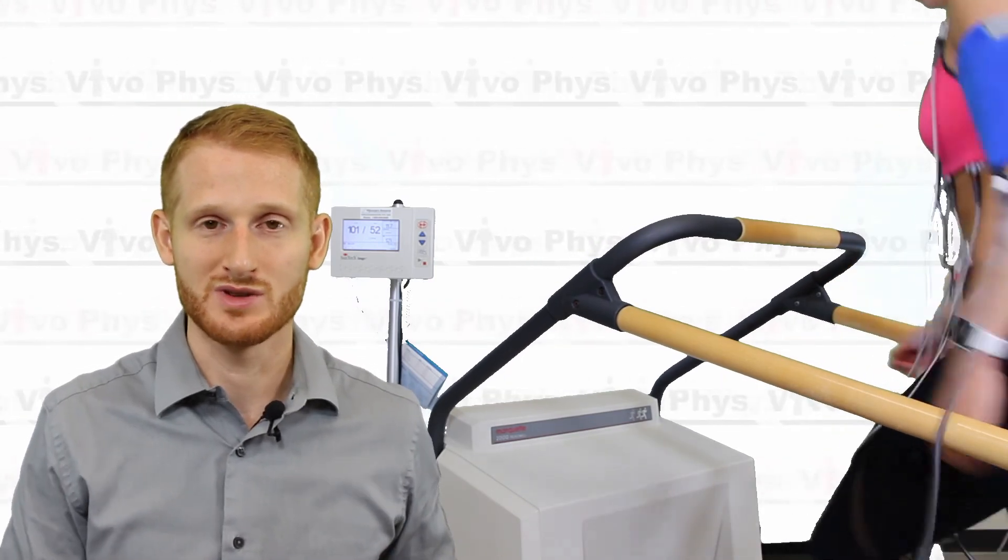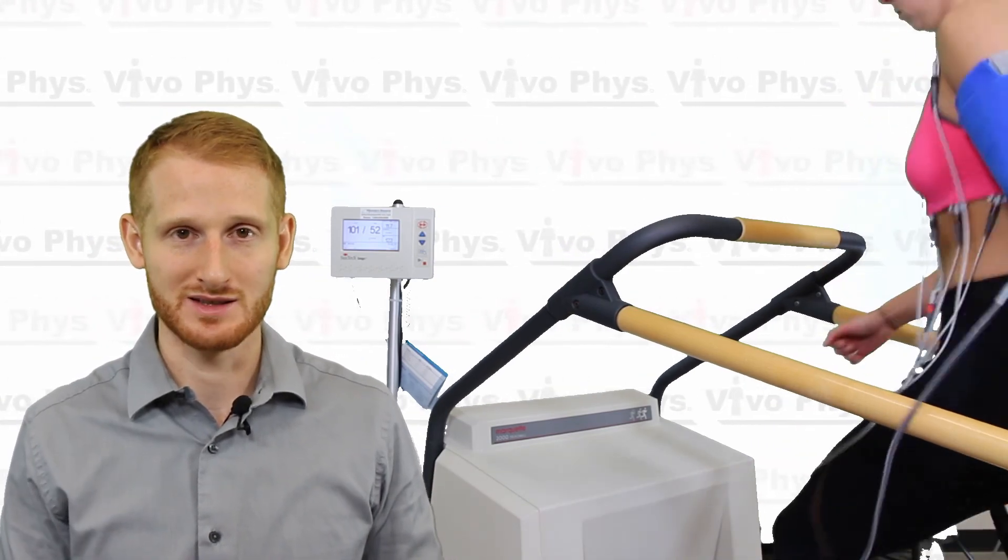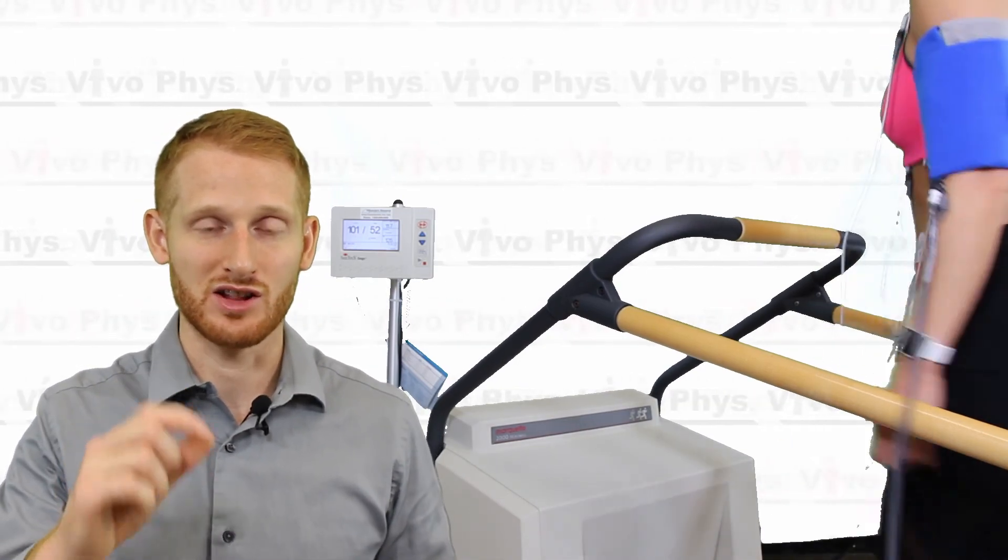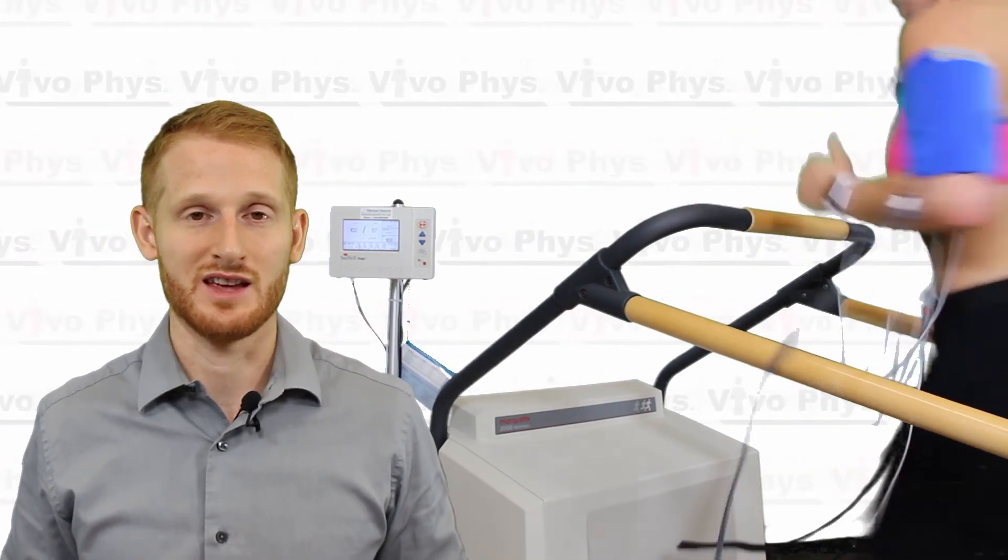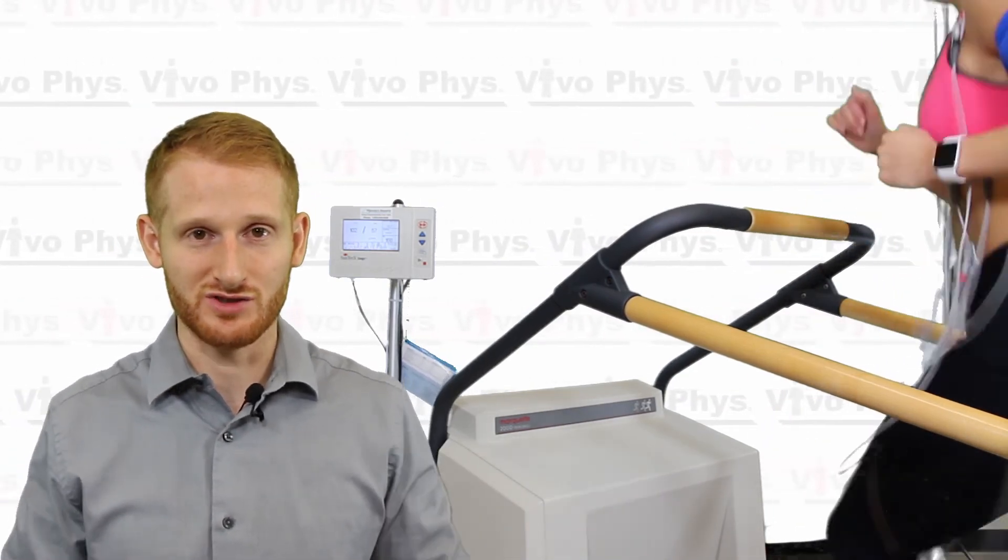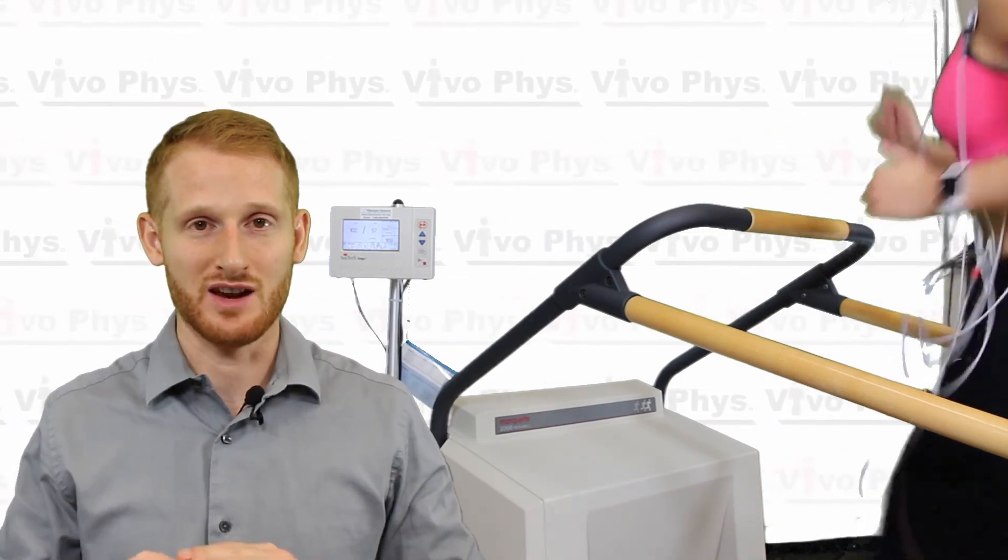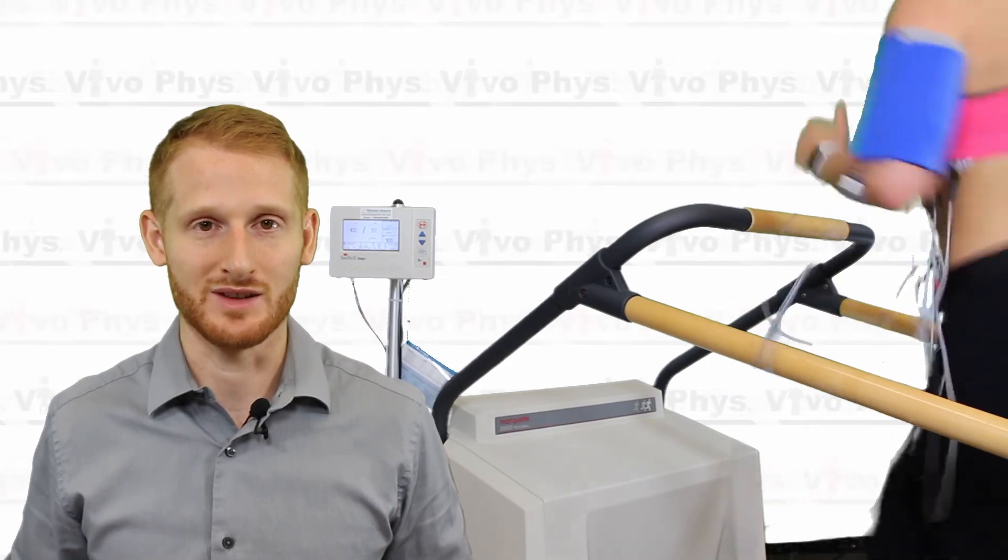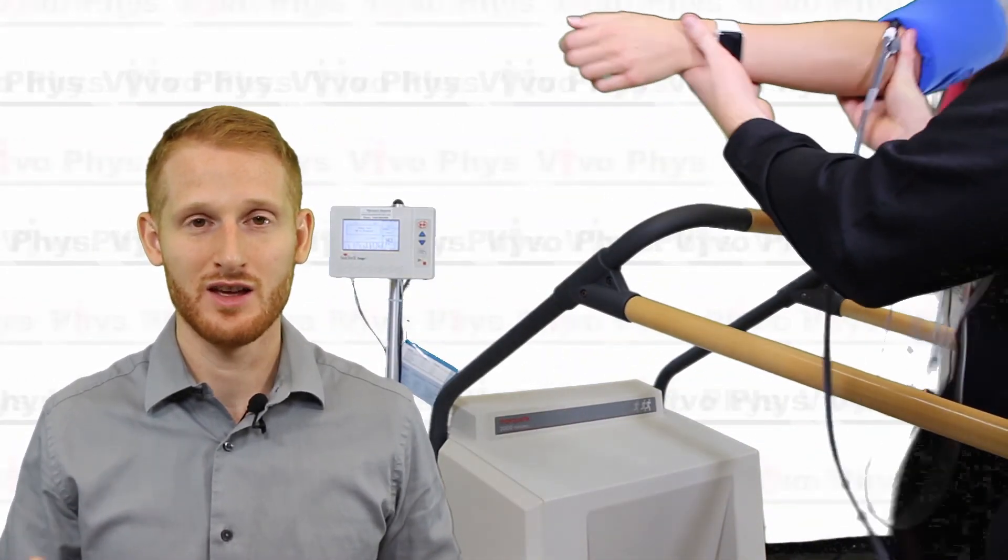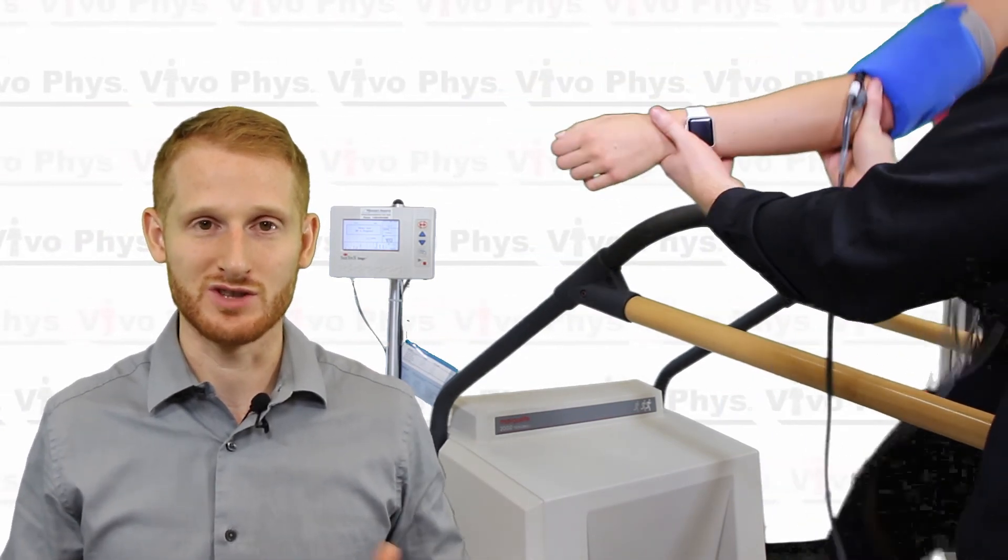The treadmill is going to go up in speed and grade every three minutes and all those measurements I just listed should be done at least once per stage typically in the last minute. Make sure that you remind the person that they're in control of the test. It stops when they think it should stop. Whenever they want the test to stop tell them to grab the handrails and straddle the belt so they're not standing on it anymore and that signifies they are done. You on the other hand also are looking for reasons to stop the test. Any sort of electrocardiogram abnormality or if you just got to whatever endpoint you were looking for for the test then you stop the test yourself.